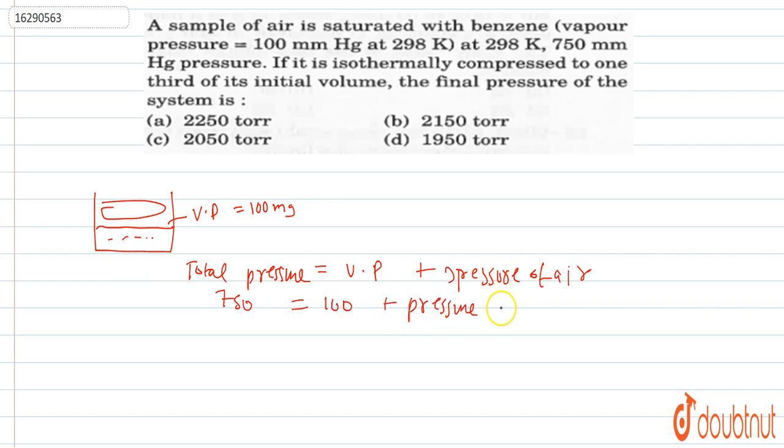The pressure due to the air is 750 minus 100 mmHg. Pressure of air will be 650 mmHg.